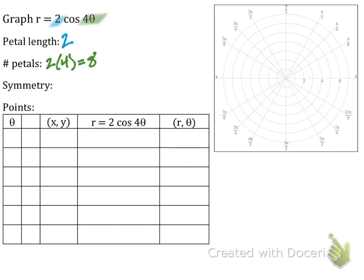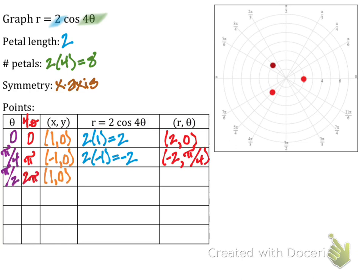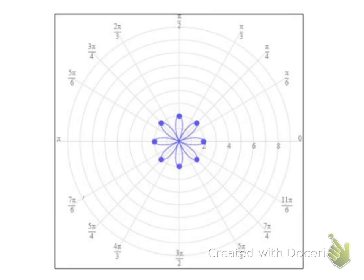For the last example, petal length is two, we have four-theta and n equals four, so eight petals. This is a cosine, so x-axis symmetry. Starting with theta equals zero, we get the point (2, 0). Next, trying theta equals pi over four gives four-theta equals pi, and plugging in gives (−2, pi/4). With x-axis symmetry, that mirror point is there as well. Trying theta equals pi over two gives four-theta equals two pi, and plotting gives (2, pi/2). With x-axis symmetry and eight symmetric petals, we can see where all the others must go — and that's what it looks like in Alex.